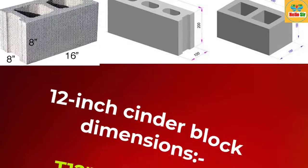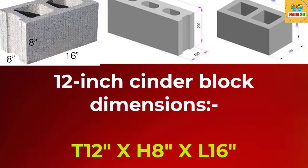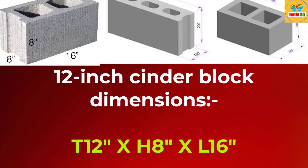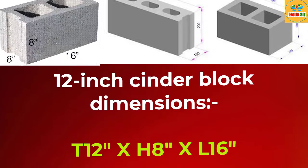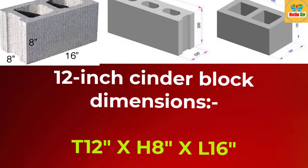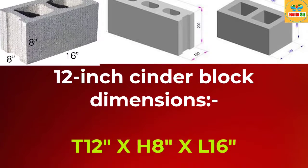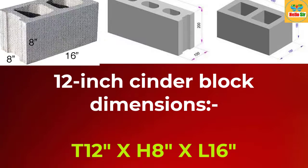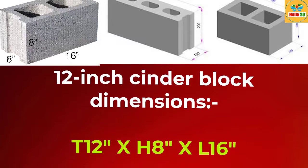12-inch cinder block dimension: The nominal dimension of a 12-inch full cinder block is 16 inches long by 8 inches high by 12 inches wide.